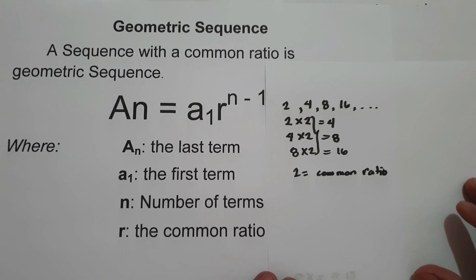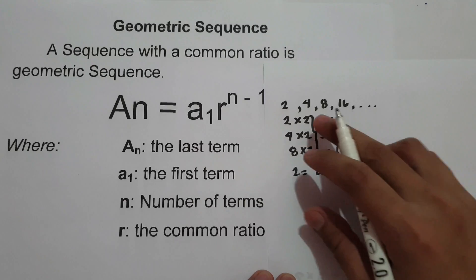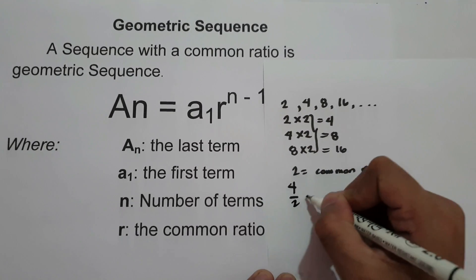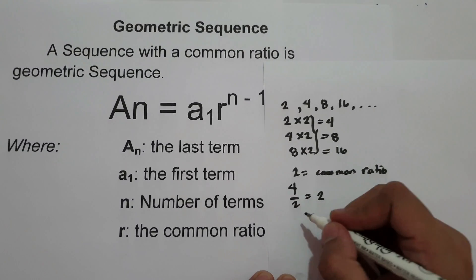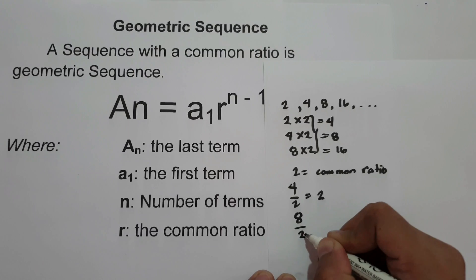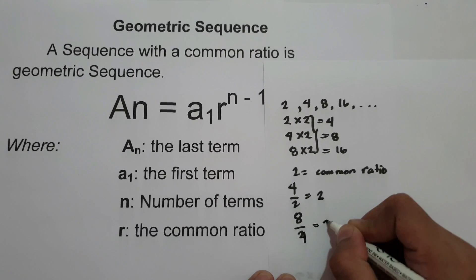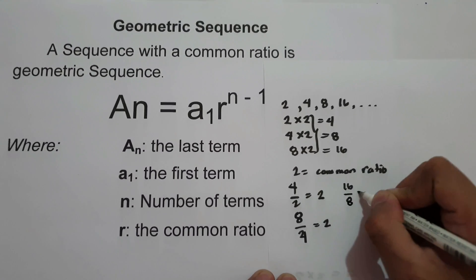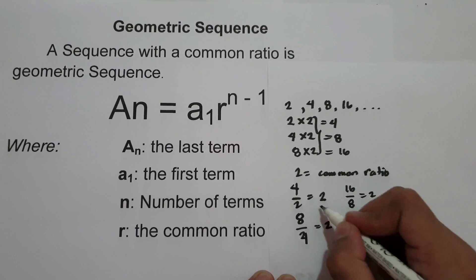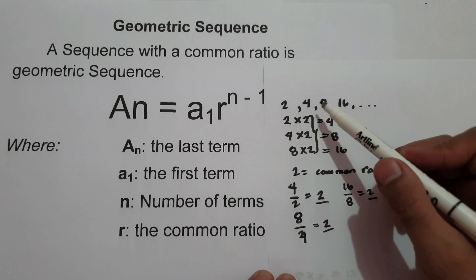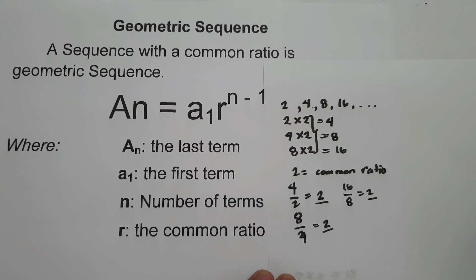To find the common ratio, simply divide the second term by the first term. That is 4 divided by 2, which is 2. And 16 divided by 8 is also 2. So therefore, 2 is our common ratio. Again, to find the common ratio, simply divide the second term by the first term.